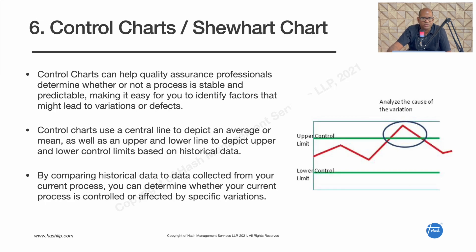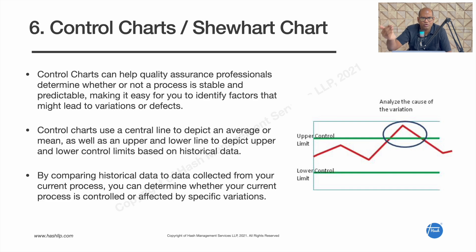The sixth tool is the control chart, also called a Shewhart chart. Control charts help quality assurance professionals determine whether a process is stable and predictable, making it easy to identify factors that may lead to variation. A control chart uses a central line to depict the average, and upper and lower lines to depict the upper control limit (UCL) and lower control limit (LCL). If any plotted value goes above the UCL or below the LCL, the process is considered unstable.